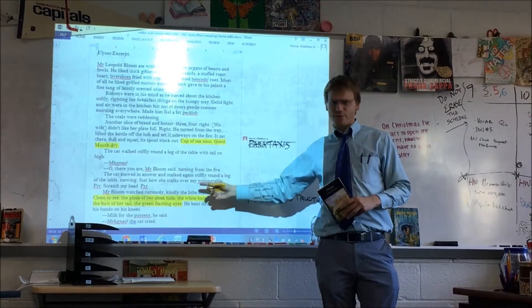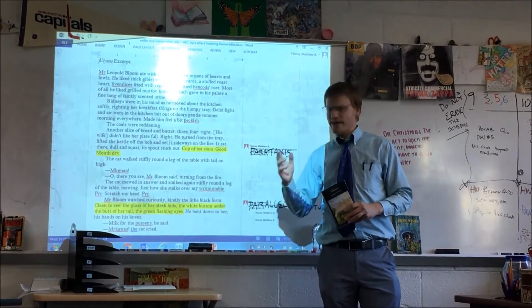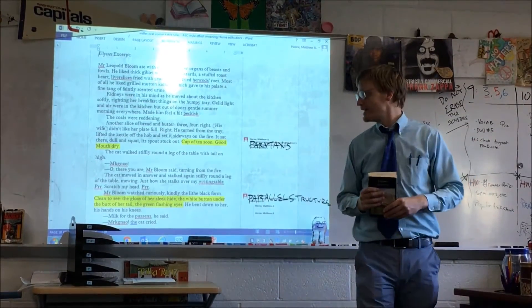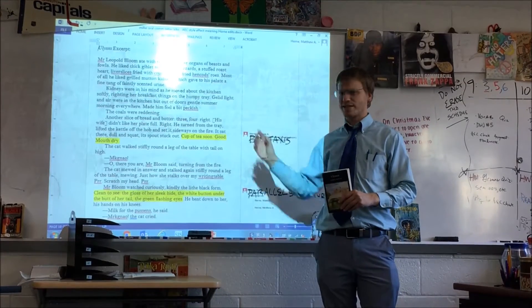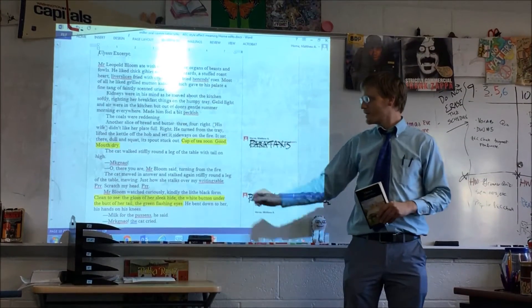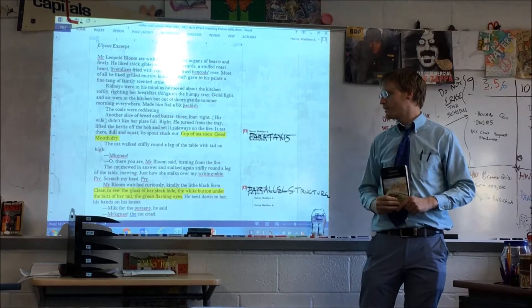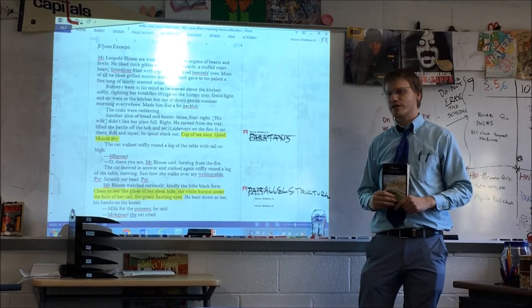He goes on to interact with his cat a little bit in the passage, and he starts admiring his cat, just like many of us admire our pets, and he describes her in kind of a more epic way than the rest of the passage has been by saying, clean to see, the gloss of her sleek hide, the white button under the butt of her tail, the green flashing eyes.